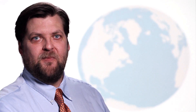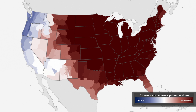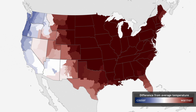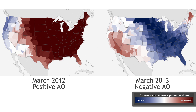A year ago, the nation experienced its warmest March on record. Look how hot it was across the country in March 2012 compared to how cold it was this year. During March 2013, a very negative AO phase accompanied colder than average temperatures in the United States — much colder than a year ago when, you guessed it, the AO was largely positive.